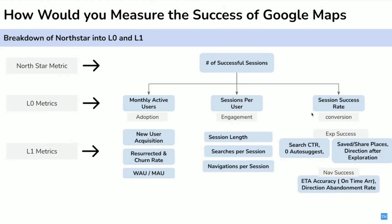So the session success rate is the proportion of sessions in which the user has either a successful exploration — searching and getting the correct result — or a successful navigation — navigating with on-time arrival and pretty accurate ETA. This is how you plot the narrative for any metric-based question.